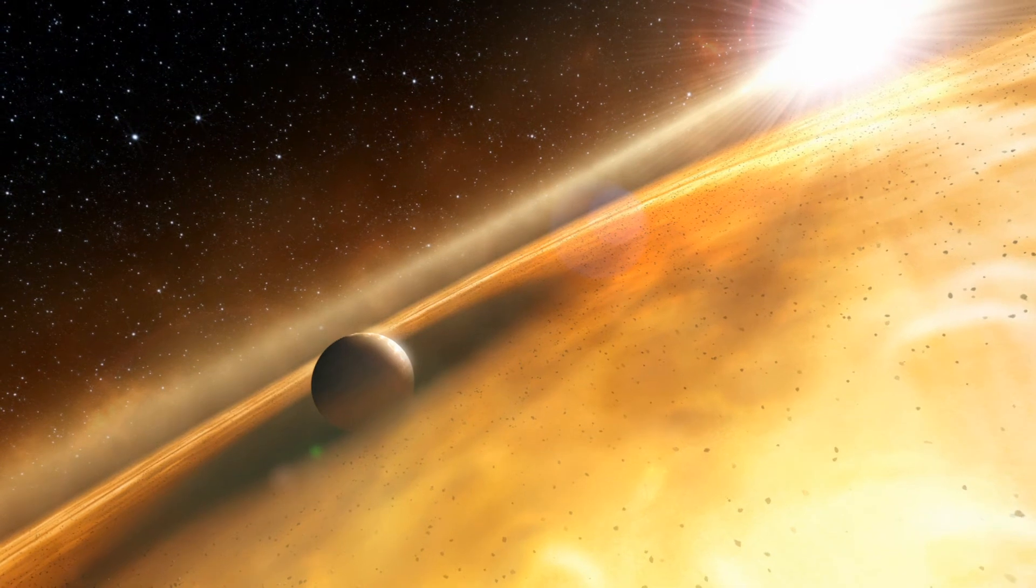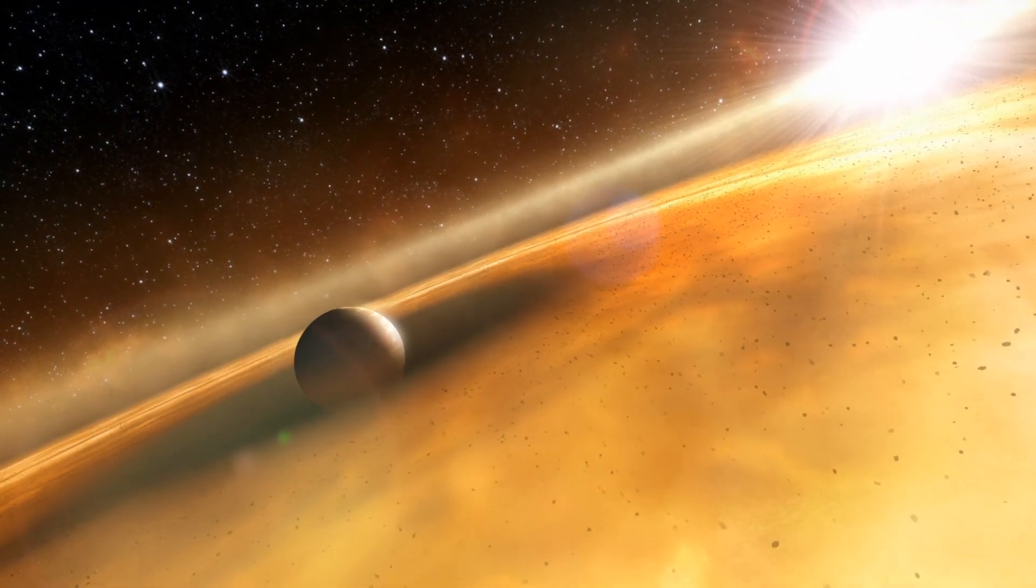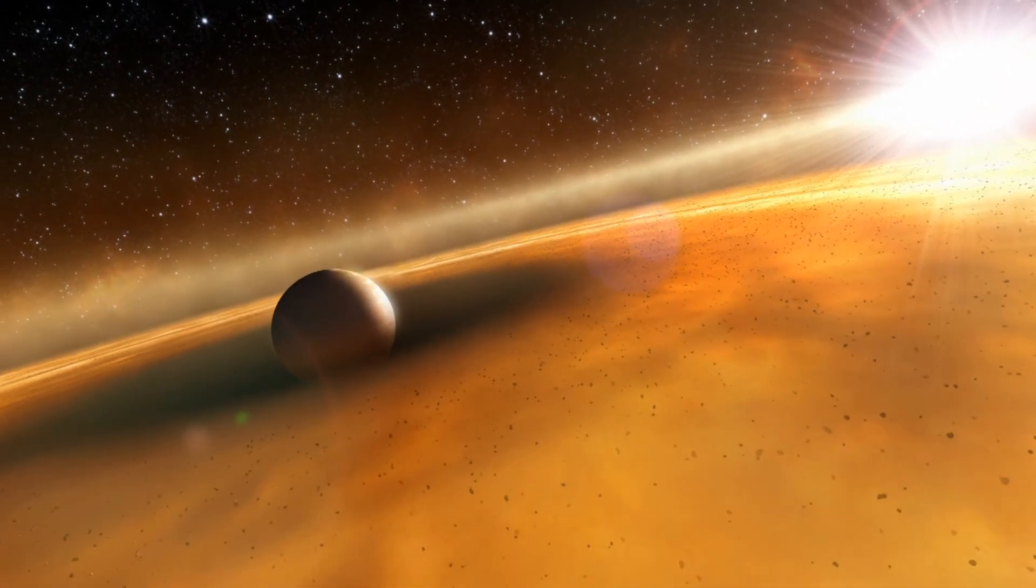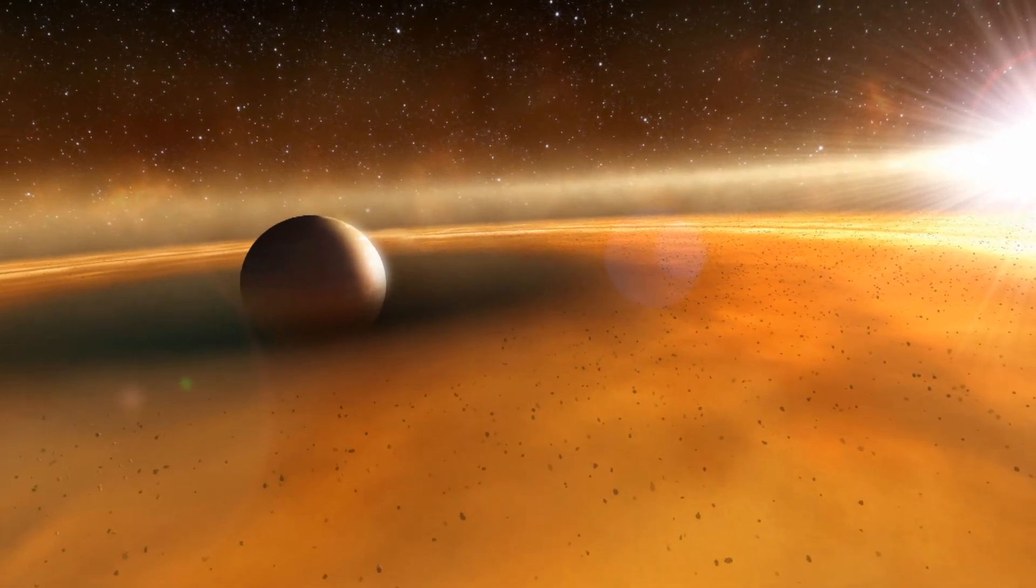So Hubble managed to peer through the glare and view the planet directly. Then clues were gathered to paint a picture of this exotic world. The shape of the disk hints that the planet is at most three times the mass of Jupiter.